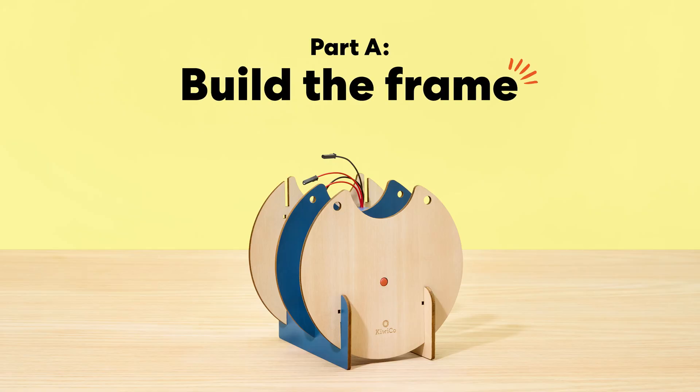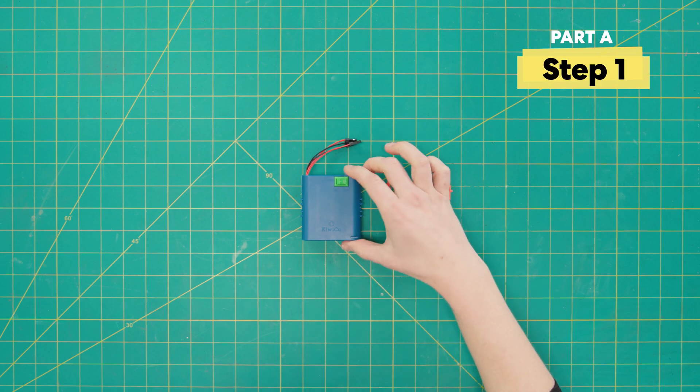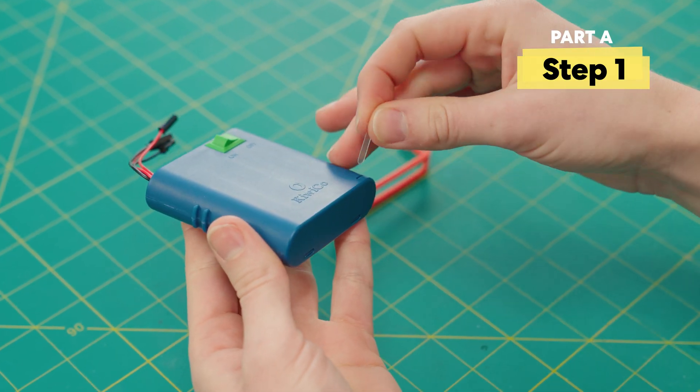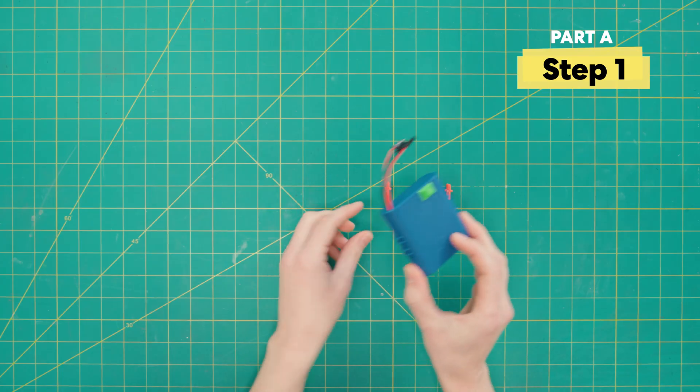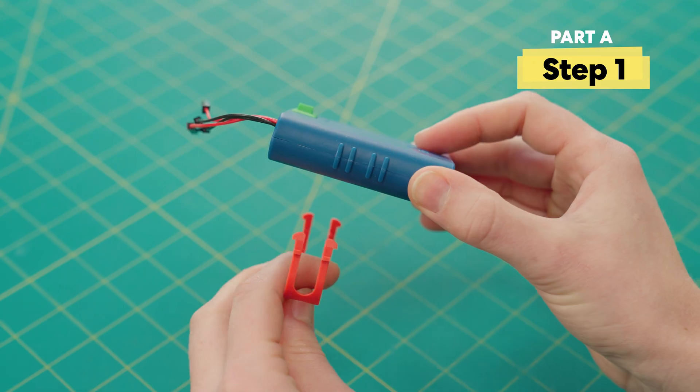Alright, part A, build the frame. So first grab the battery pack and make sure to remove this little tiny piece of tab. Then take an orange clip and slide it up onto these two notches.